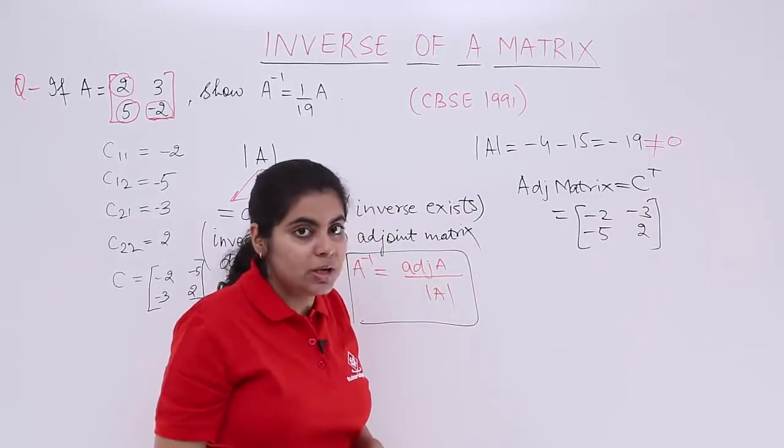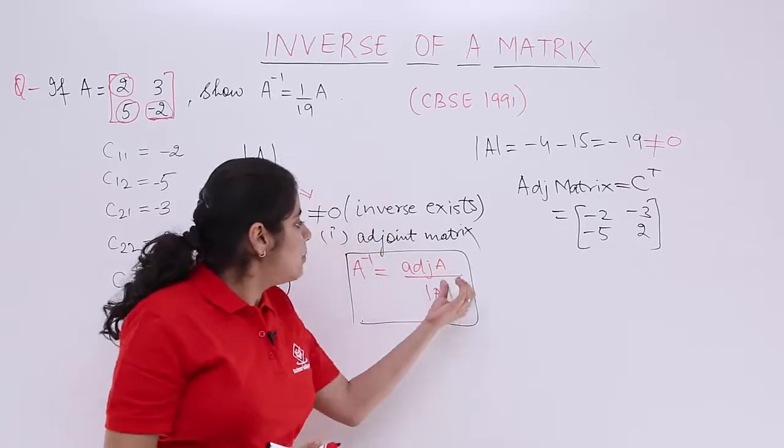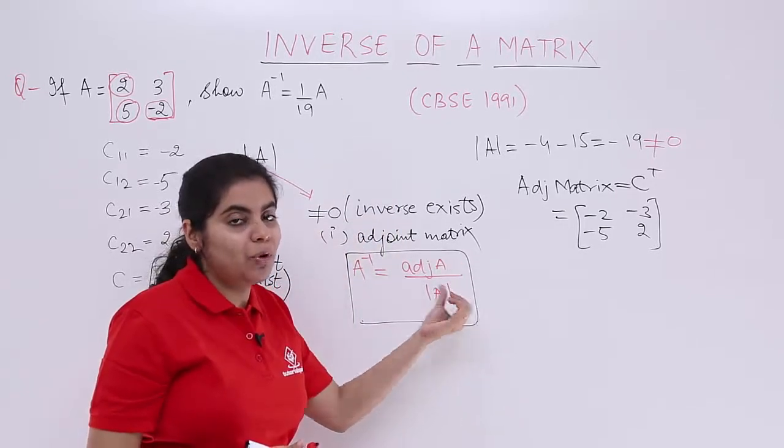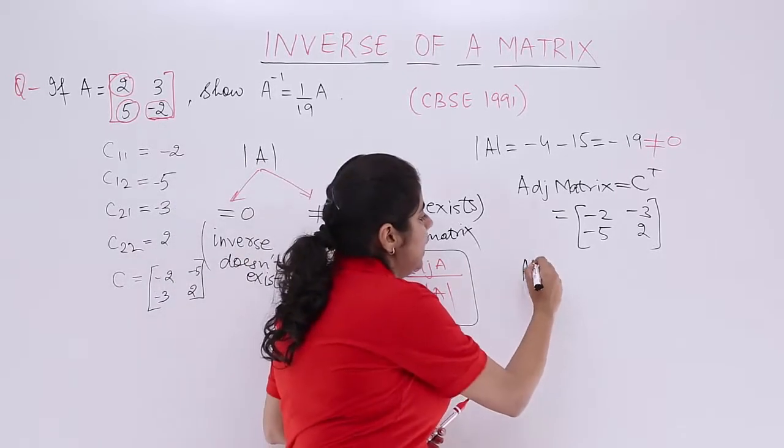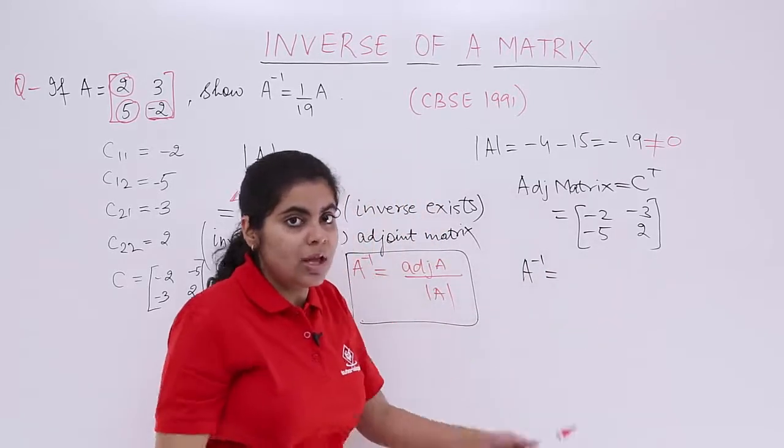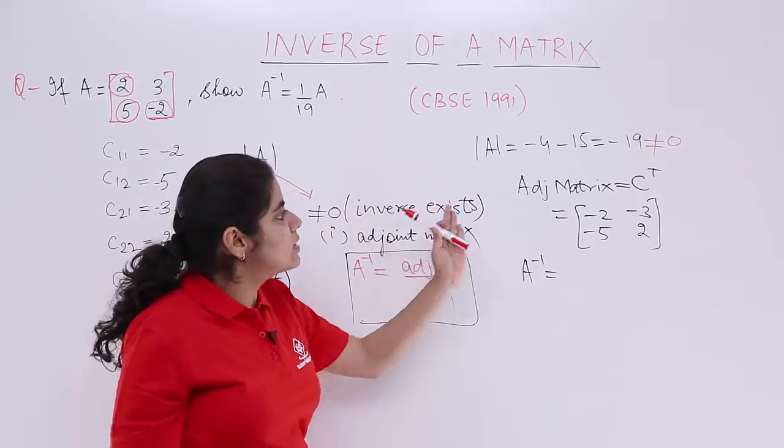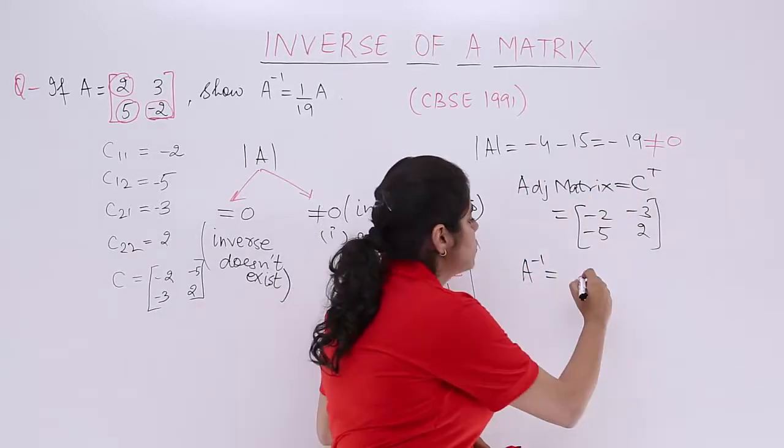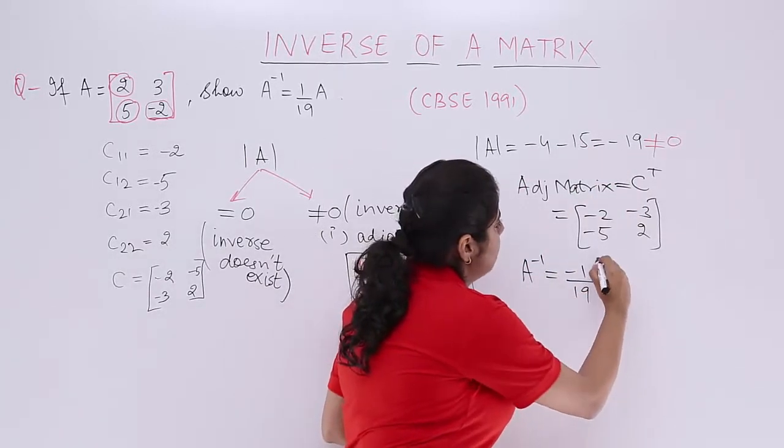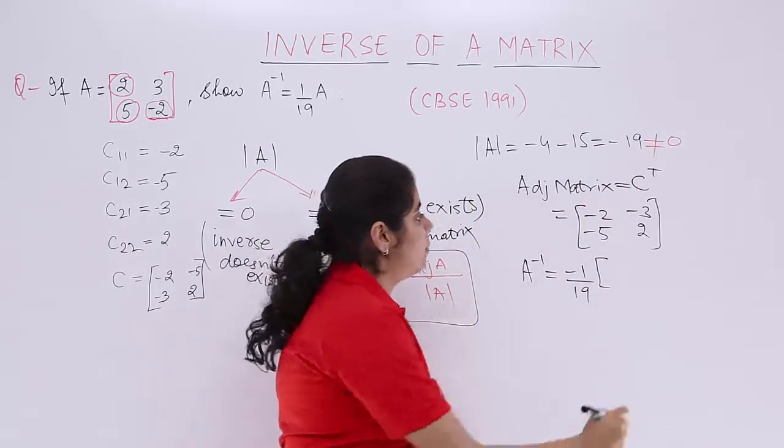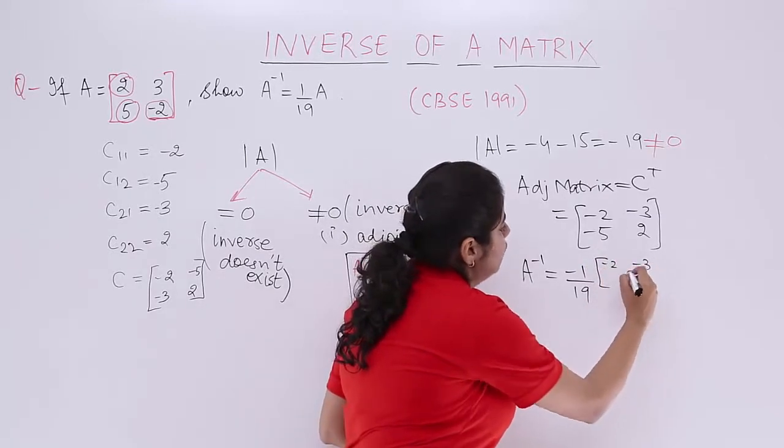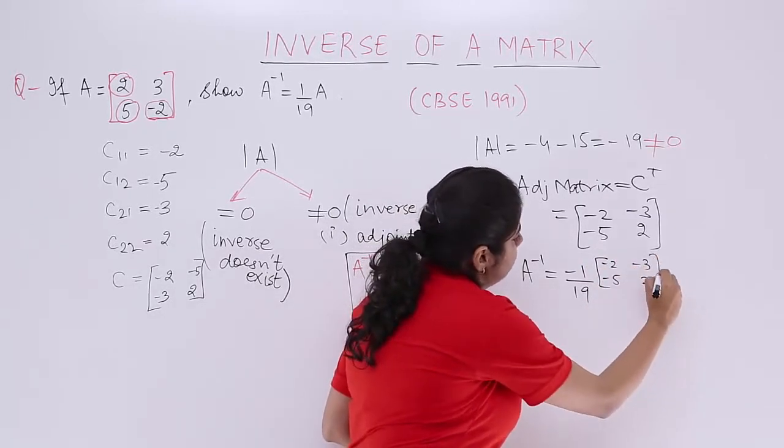When we got the adjoint matrix, my formula says adjoint upon determinant. So simply, A inverse is equal to this adjoint upon the determinant. Where is the determinant? It is minus 19. So the answer is minus 1 by 19 multiplied by this whole value.